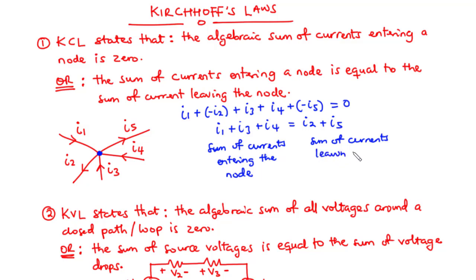This gives rise to an alternative way of stating KCL: the sum of currents entering a node is equal to the sum of currents leaving the node. We have i1 plus i3 plus i4 — the sum of currents entering — equal to i2 plus i5 — the sum of currents leaving. This is how to demonstrate KCL using this network.